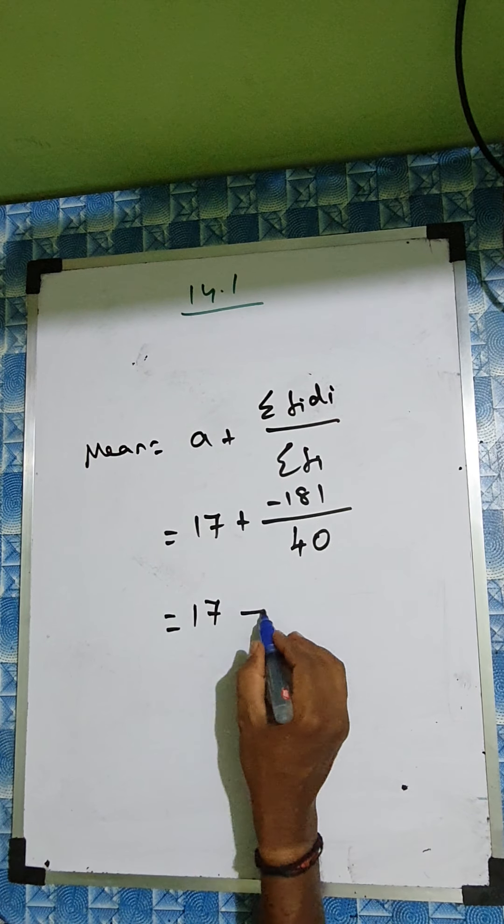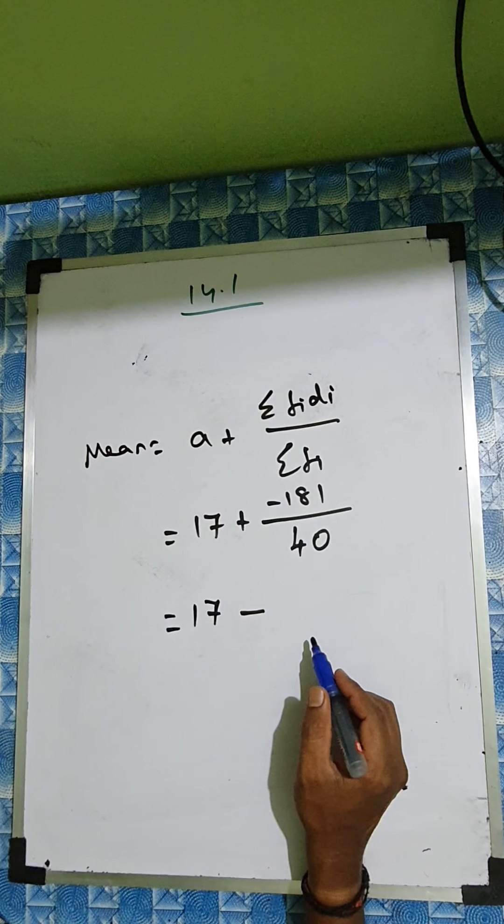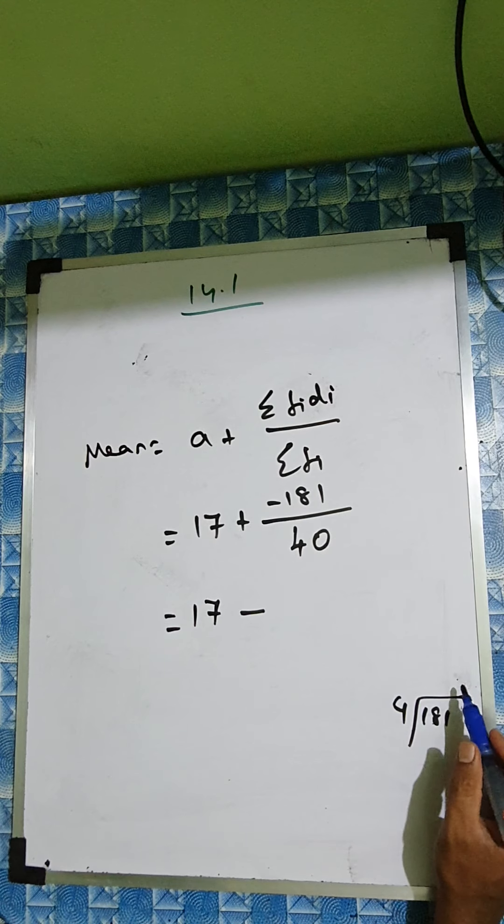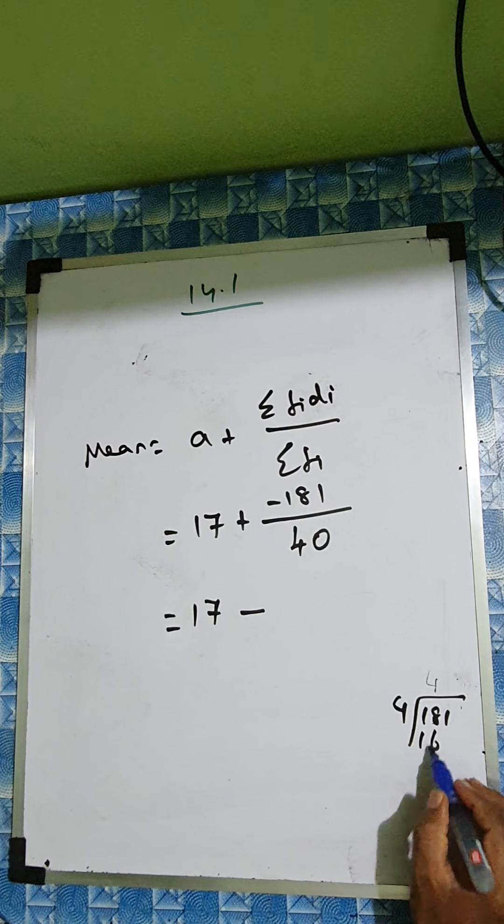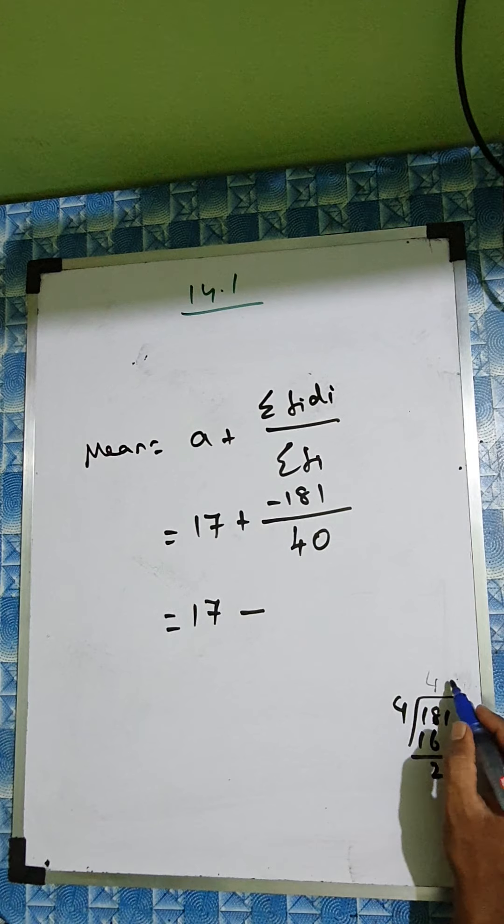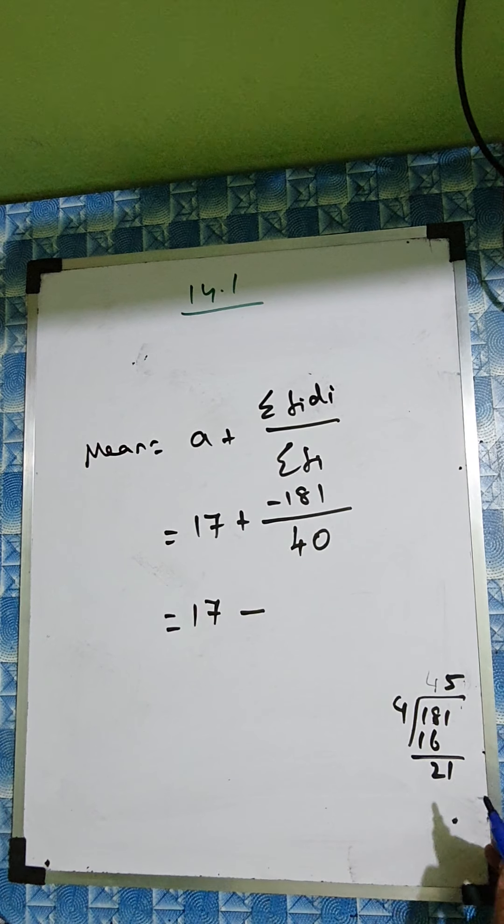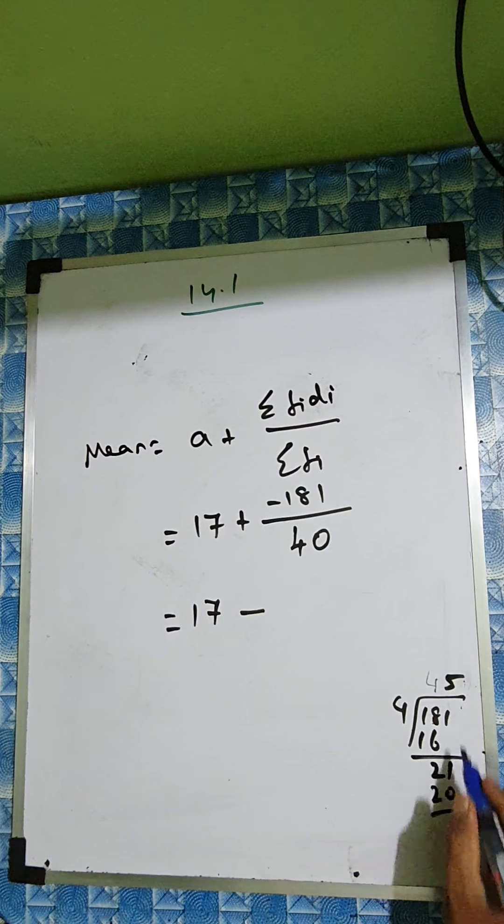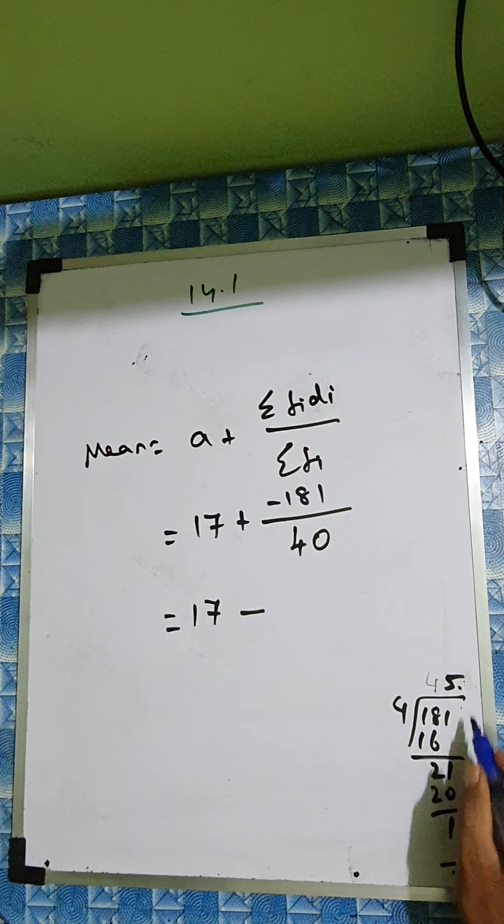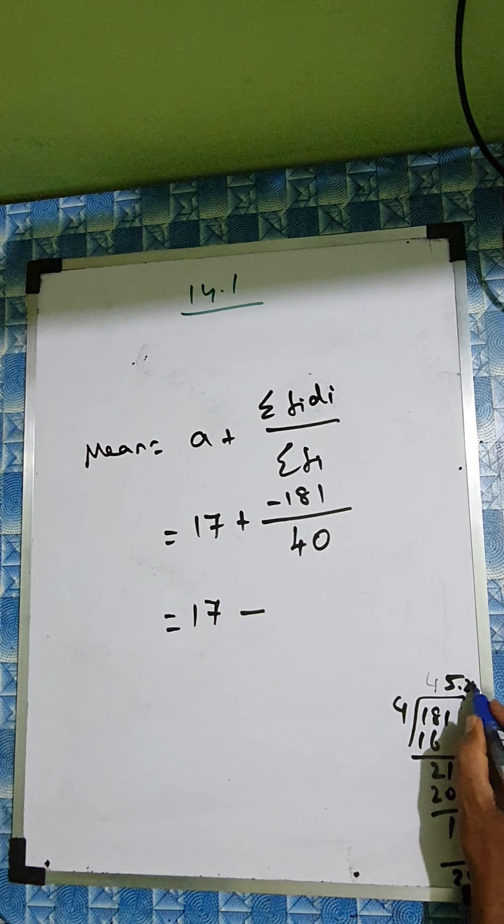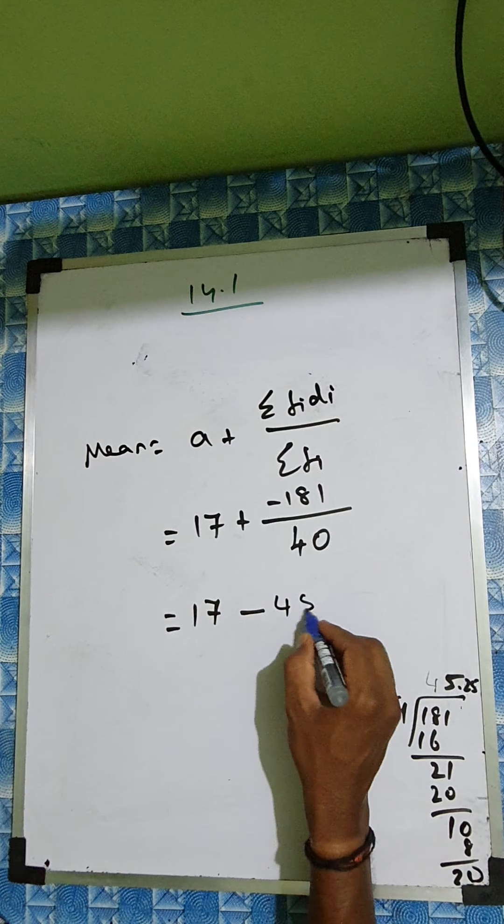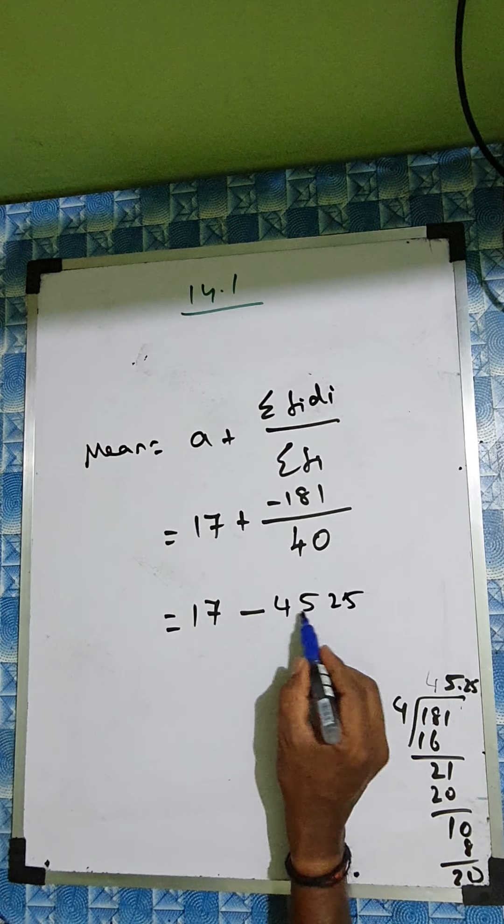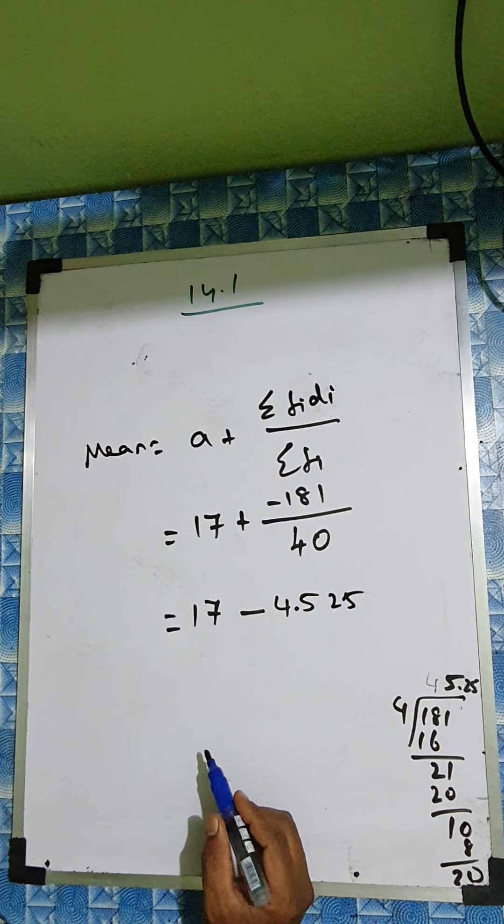Now 17 minus. Now we'll divide 181 divide by 40. So 4 4s are 16, remind 2. 21. 4 5s are 20, remind 1. 10. 4 2s are 8, remind 2. 4 5s are 20. So you can just write here 4.525. Point will come back, 4 point 525.